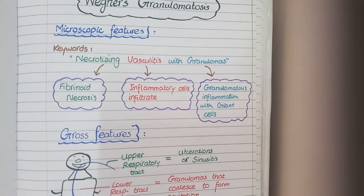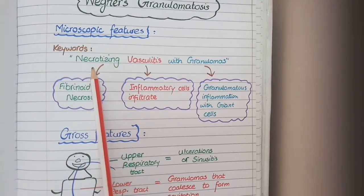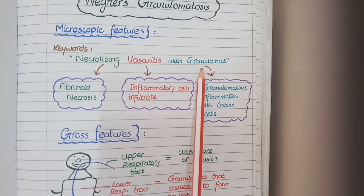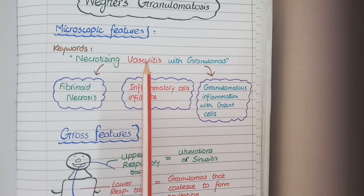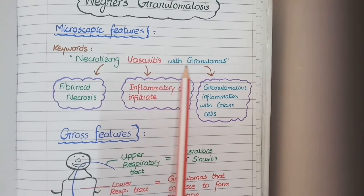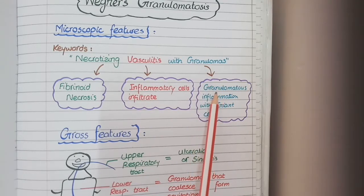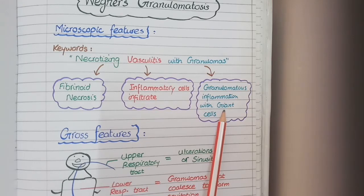The second type of small vessel vasculitis is Wegener's granulomatosis, and we will study its microscopic features first. The keywords are necrotizing vasculitis with granulomas. Necrotizing means fibrinoid necrosis; vasculitis means inflammatory cell infiltrate; and granulomas means granulomatous inflammation with giant cells. So you will see fibrinoid necrosis, inflammatory cells such as neutrophils, monocytes, and lymphocytes, and granulomas with giant cells.